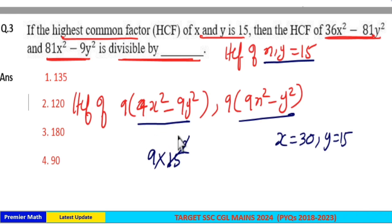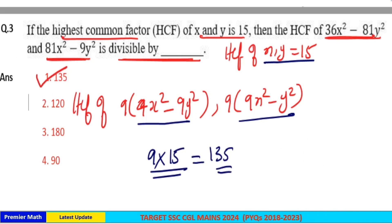Just take 15 outside because there is minus between x² and y². So 9 × 15 is the HCF, which is 135. Option 1 is your answer.